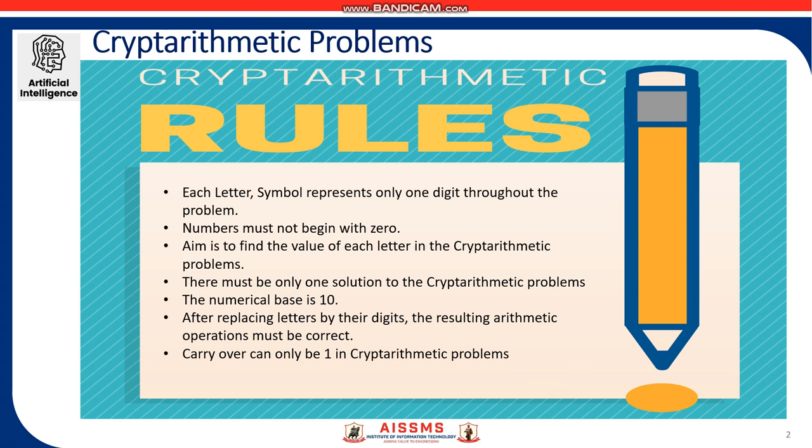After replacing letters by their digits, the resulting arithmetic operations must be correct. Carry-over can only be one in cryptarithmetic numbers, as max to max sum of two numbers will be 19. As the largest possible number is 9, so 9 plus 9 is 18 plus 1 will give a total of 19.